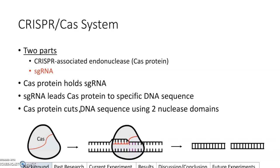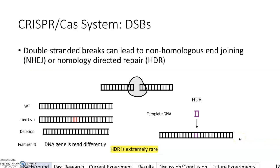If you look at the bottom figure, you can see the Cas protein with an sgRNA shown in red. It leads the complex to a specific sequence, unwinds the DNA, and the sgRNA latches onto the protospacer, causing a double-stranded break. So you have one DNA strand over here and one over there — this is called a double-stranded break, and these breaks can lead to many different pathways, for example non-homologous end joining or homology-directed repair.